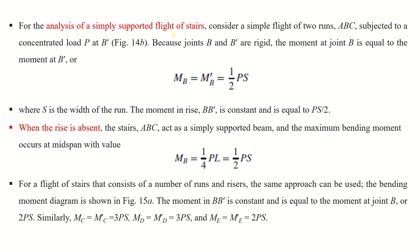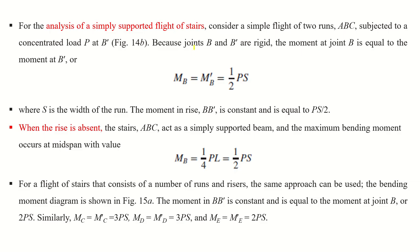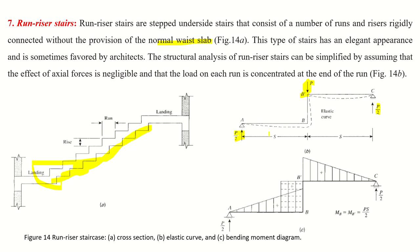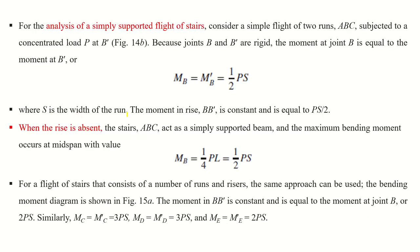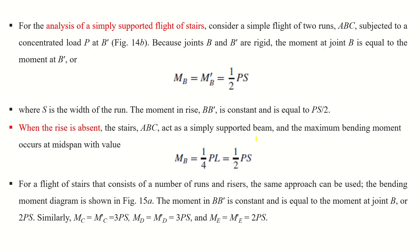For a simply supported flight of two runs A-B-C subject to concentrated load P at B', since joints B and B' are rigid, the moment at B equals the moment at B', which is P/2 × l, or P·s/2 where s is the width of the run. The moment in riser BB' is constant and equals P·s/2. When the riser is absent the stairs act as a simply supported beam, giving the same maximum bending moment of P·s/2.